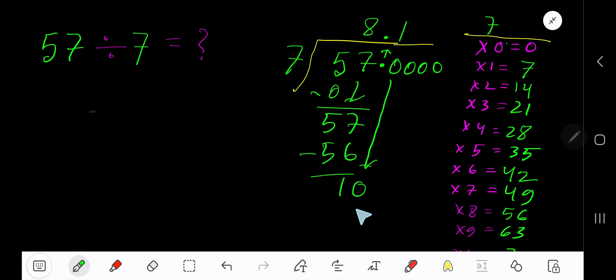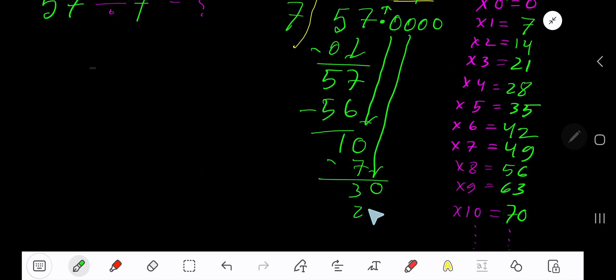7 goes into 10 how many times? 2 times 14, which is greater, so we have to take 1 time. 1 times 7 is 7. Subtract to get 3. Bring down another 0.